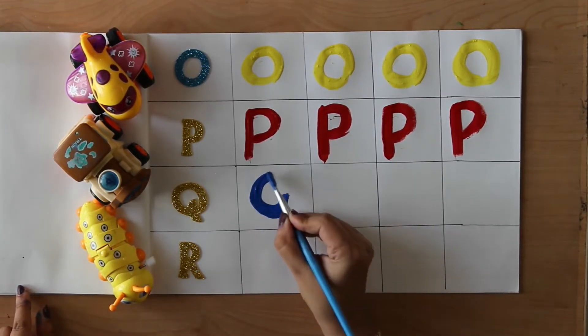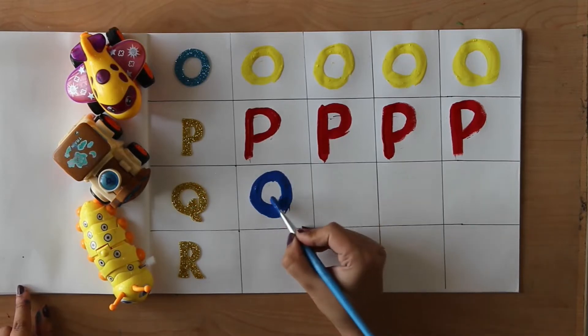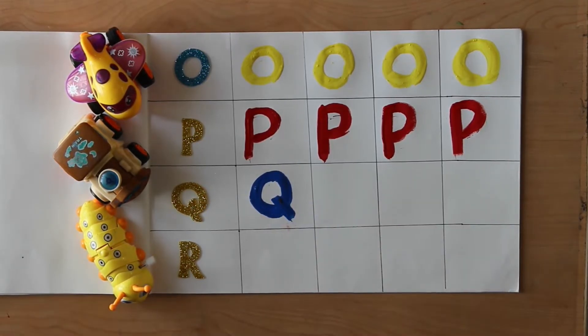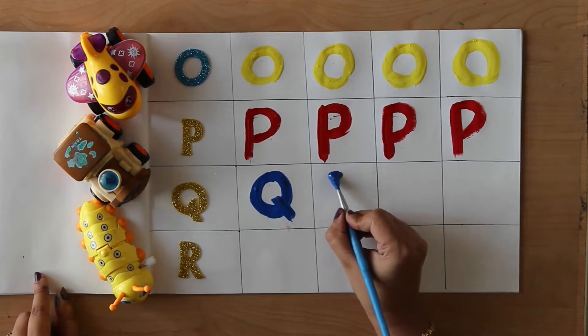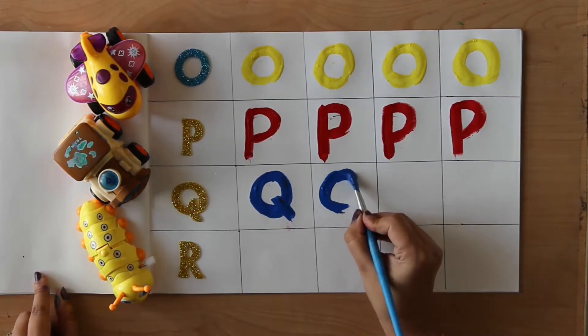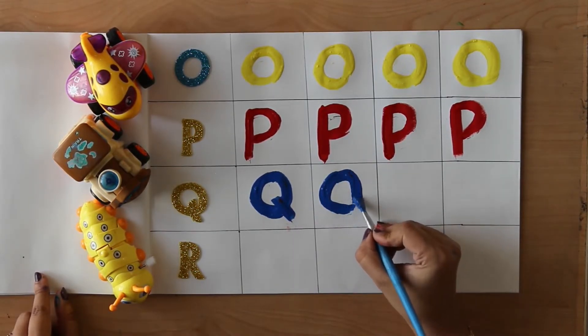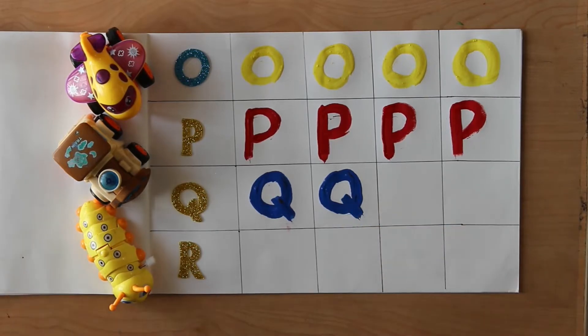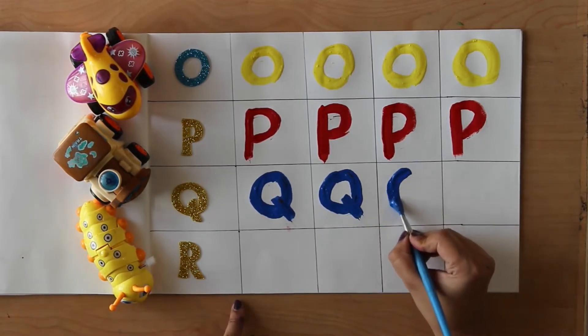Q. Q for queen. Queen means Rani. Q. Q for question mark. Question mark means Prashnachind. Q.